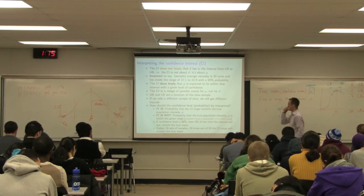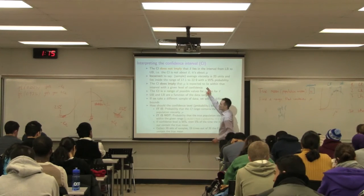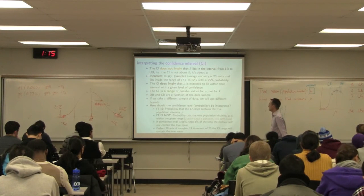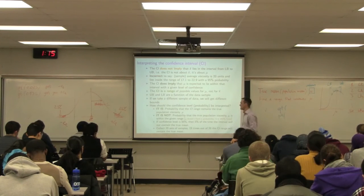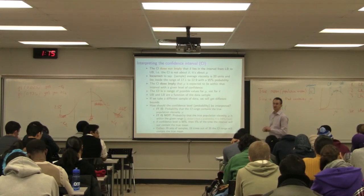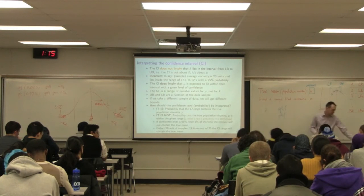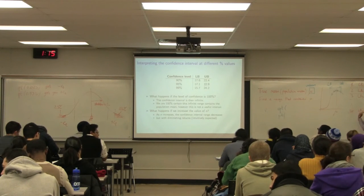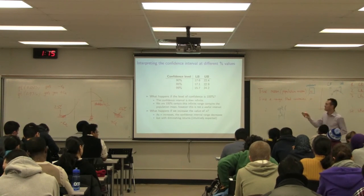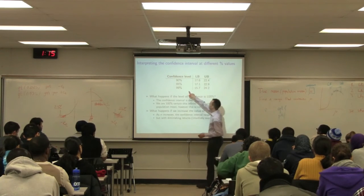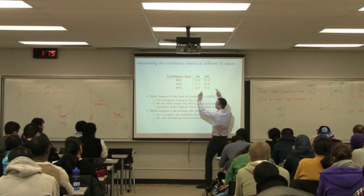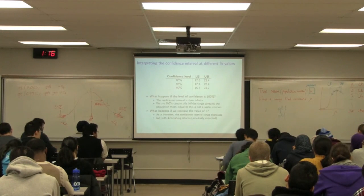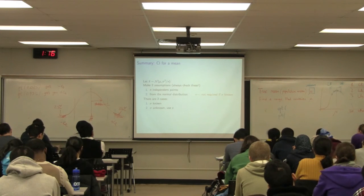CI is not about x-bar; CI is only about mu — about the population. If the confidence level is 95%, 5% of the time that interval will not contain the true mu. We looked at changing the confidence level: at 70% confidence the interval is narrower but less reliable. If I increase n, my bounds become tighter. You can go to higher and higher confidence levels, but the bounds get broader and broader.